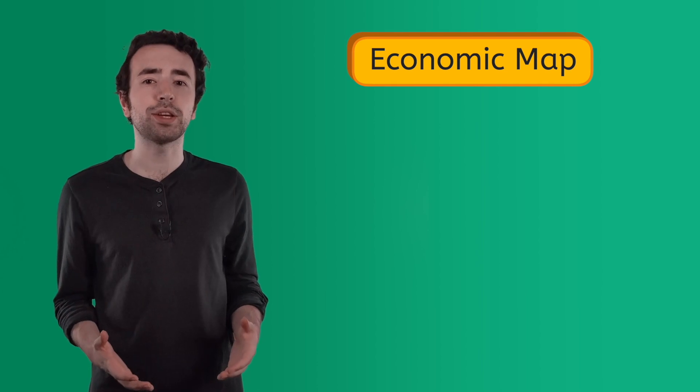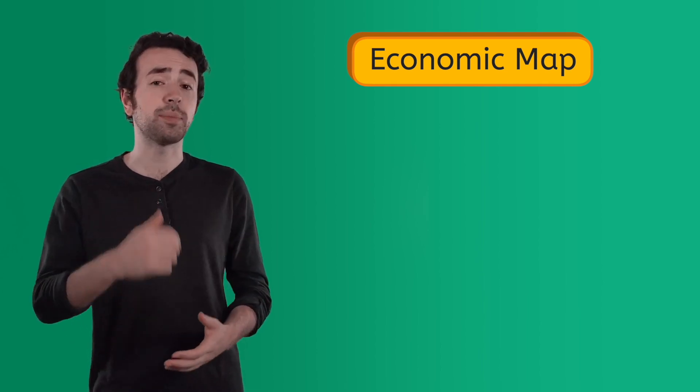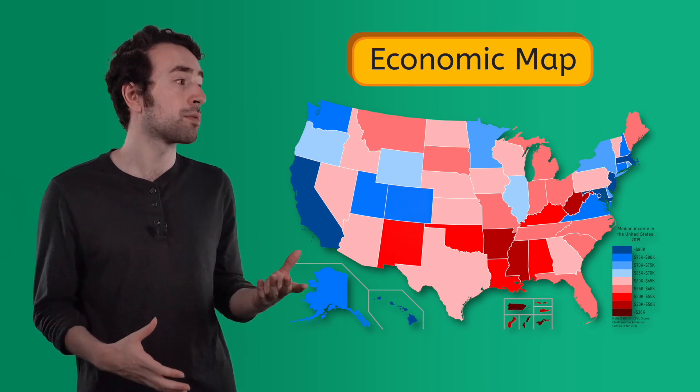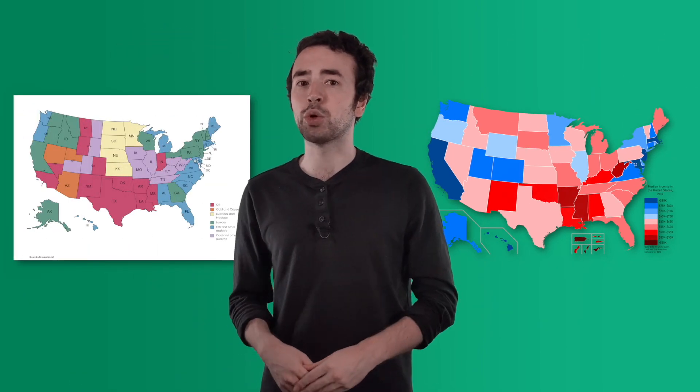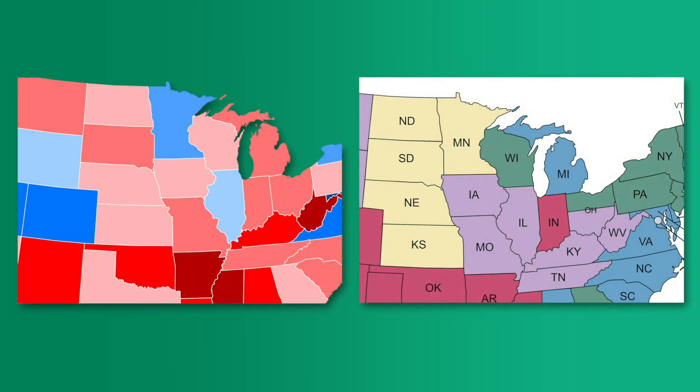Finally, we have economic maps. Economic maps show information related to businesses and money. One example is a map that shows how much money people earn from their jobs. Another example is a map that shows the major types of industries or resources in an area. Pause the video one more time to complete page 7 in your PDF and finish learning about the Midwest region. Thanks to these economic maps, I now know that households in the Midwest typically earn between $55,000 and $75,000 per year. I also know that some natural resources that come out of the Midwest include livestock and produce, oil, coal, fish, and lumber.